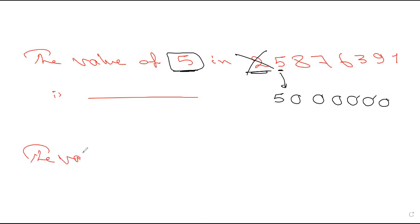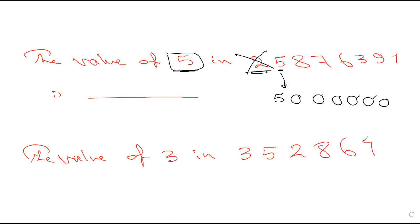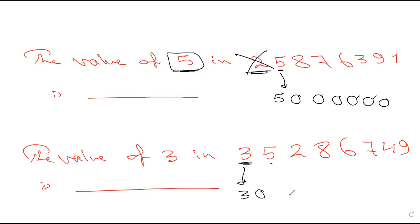Another example: the value of three in 352,867,49. Three drops down, and all digits before it become zero: 5 becomes zero, 2 becomes zero, 8 becomes zero, 6 zero, 7 zero, 4 zero, 9 zero. This is the meaning of value.